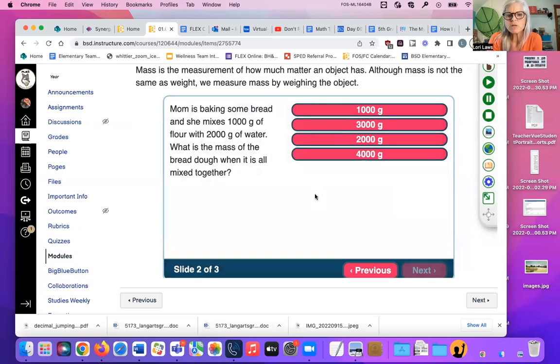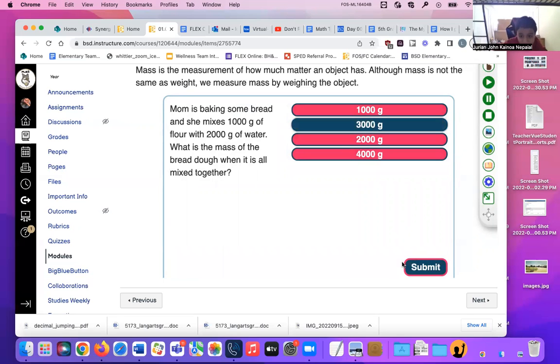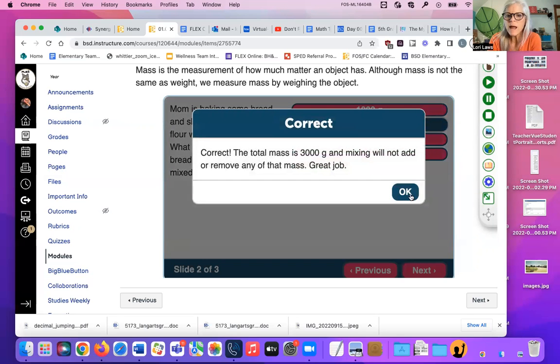Mom is baking some bread and she mixes a thousand grams of flour with two thousand grams of water. What is the mass of the bread dough when it's all mixed together? Is it going to be three thousand grams? Is it going to be a thousand grams? Two thousand? Four thousand? What do you think? You guys are thinking three? Let's see. Correct. The total mass, three thousand grams, and mixing will not work. Great job.